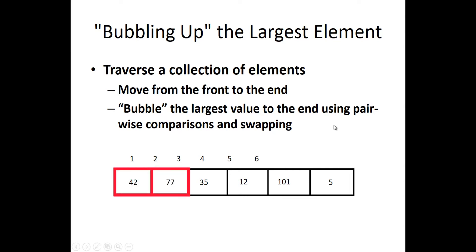After swapping 42 and 77, we increment the positions of i and j. i moves from 1 to 2 and j moves from 2 to 3, so now the second and third elements are compared. 77 and 35 are compared — i is 2 and j is 3. Again, 77 is the largest number, and since we are sorting in ascending order, the larger value must be on the right-hand side, so we swap again.